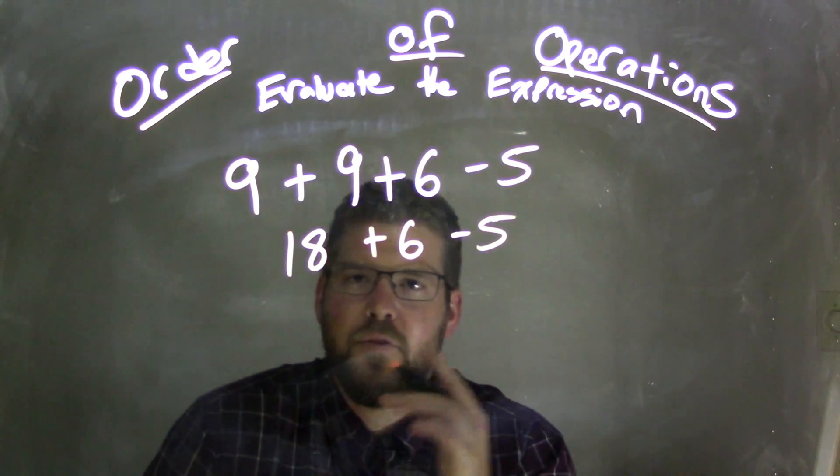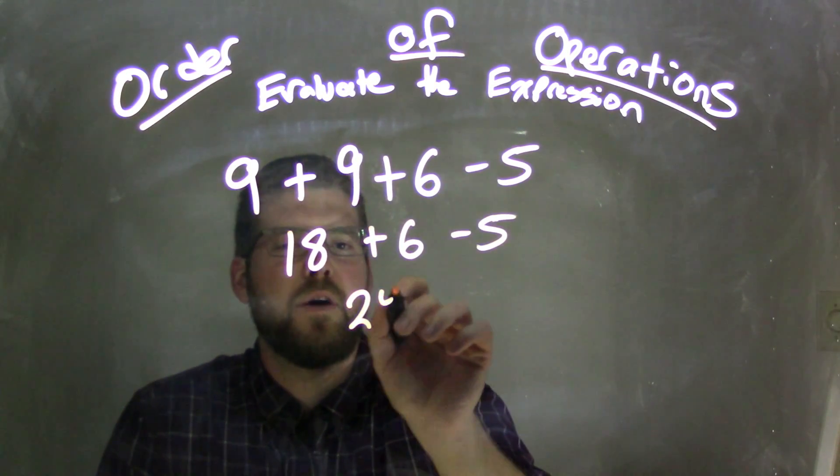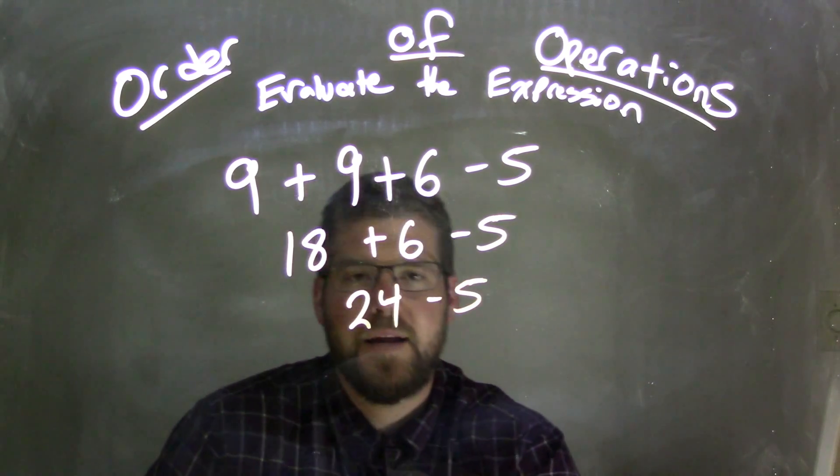So now again, left to right with the addition. So 18 plus 6 comes out to be 24 minus the 5, bring down the 5.